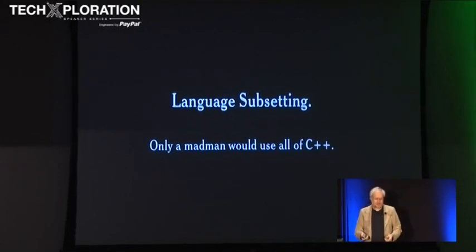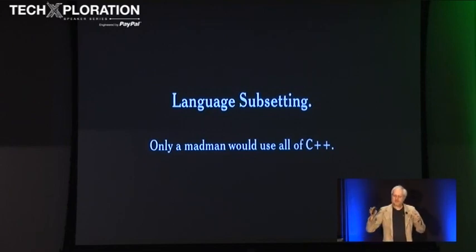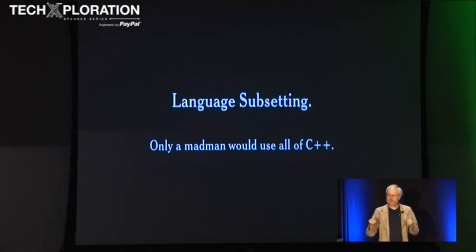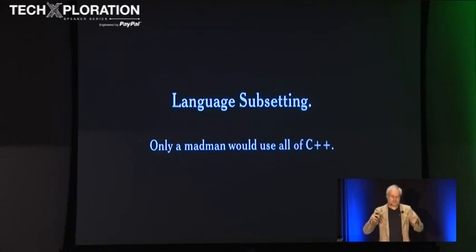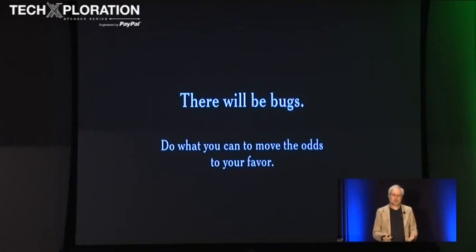It's been said only a madman would use all of C++. The designer of a language does not have the power to remove features — but you do. You can decide which features make sense, which will make you a more effective programmer, and which will keep you out of the abyss. Just use those. I'm not promising that a more rigorous style will let you avoid all bugs — there will always be bugs. What I am promising is that you can shave the odds in your favor. You can spend less time in the abyss, and you can do that for no cost.